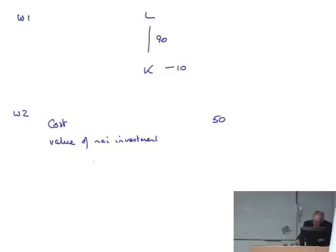Working one. 90%, 10%. Working two, cost. The cost of the investment was 50. The value of the NCI investment is given to us as 5,500. The total worth of Christina, 55,500.